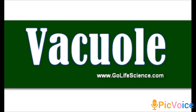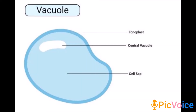Vacuoles are membrane-bound spaces found in the cytoplasm. They contain water, sap, excretory products, and other materials not useful for the cell. The vacuole is bound by a single membrane called the tonoplast. Inside is the central vacuole filled with cell sap, which is the water content, along with excretory products.